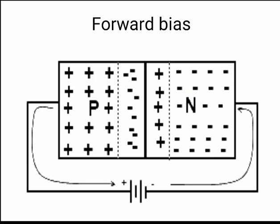Opposite charges repel each other. The positive terminal of the battery repels the holes in the p-type, pushing them toward the depletion region — toward the potential barrier. This applies pressure and reduces the width of the barrier. Similarly, electrons inside the n-type are repelled by the negative terminal and also push against the barrier wall, further reducing its width.